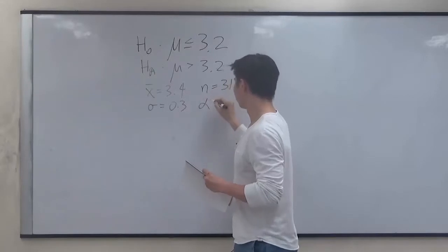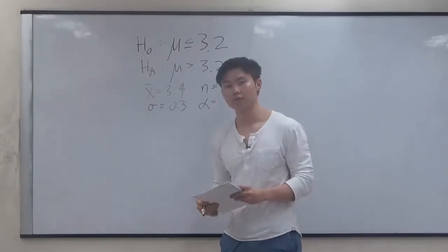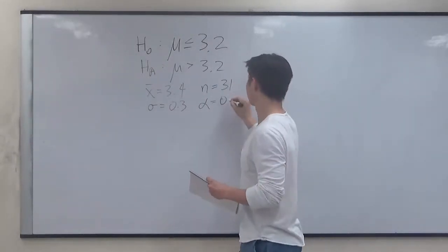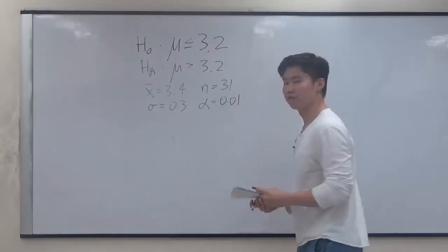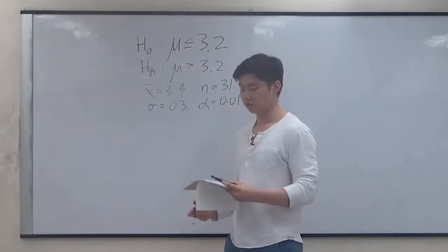The number of samples that we tested is 31. And our alpha value, our significance level, is 0.01. Now we have all the necessary information to complete the problem.